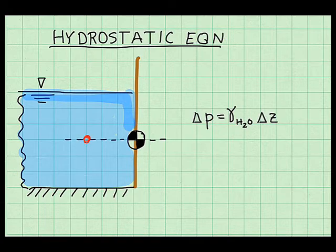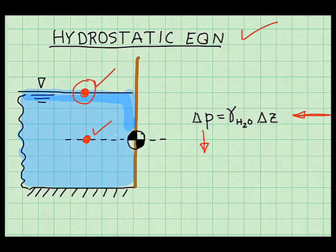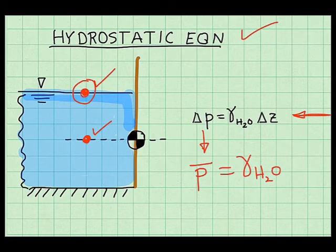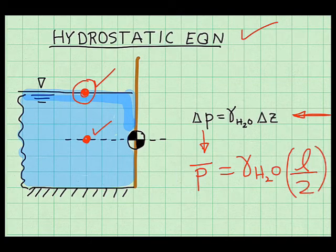To find this pressure, I'll apply the hydrostatic equation, written here. I'll define my two points, point 1 and point 2. This is the pressure difference. So that's the pressure at this depth minus the pressure at the surface. And this pressure is zero. So this term simply becomes the pressure at the depth of the centroid. I'll drop down specific weight of water. And delta z is simply the elevation change between these two points, which is the height of the panel, L, divided by 2. And in this equation, there's my goal. This is known, and this is known.